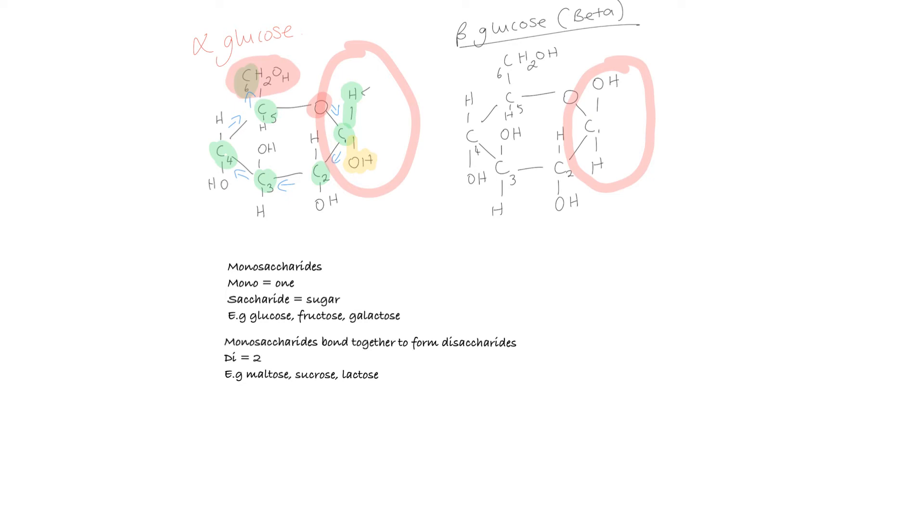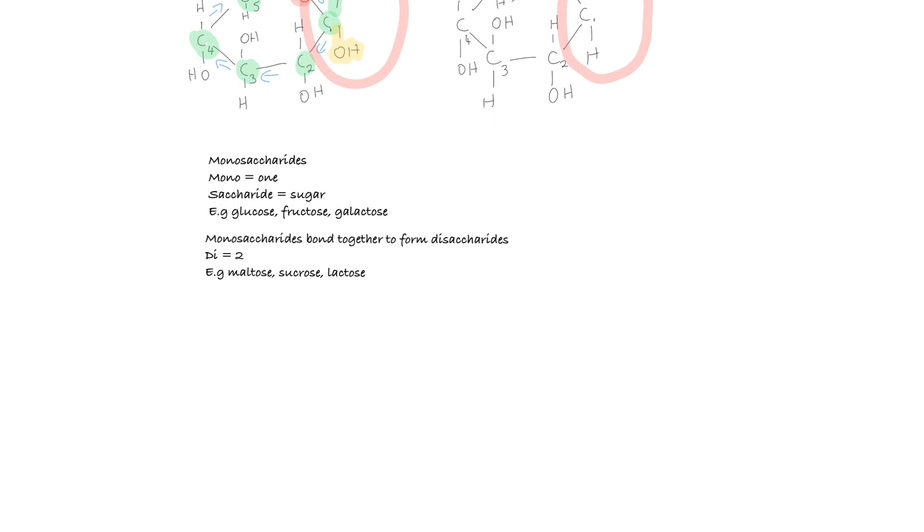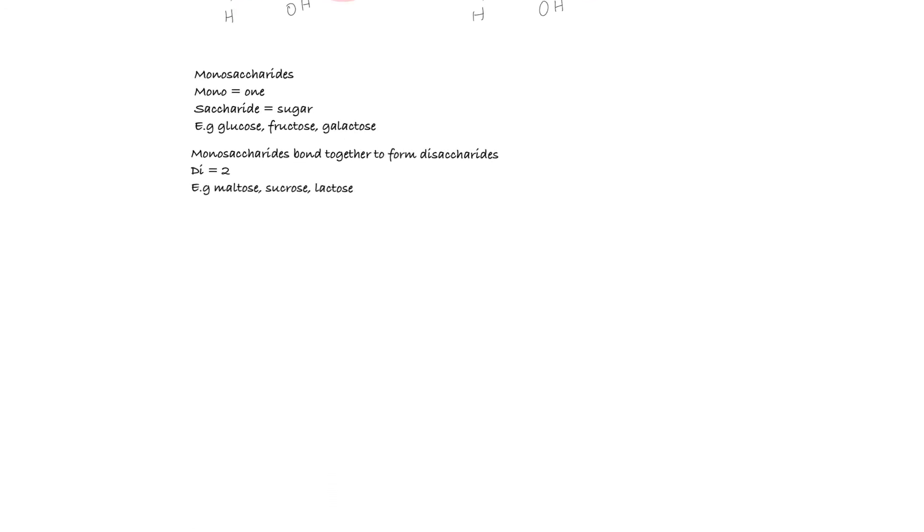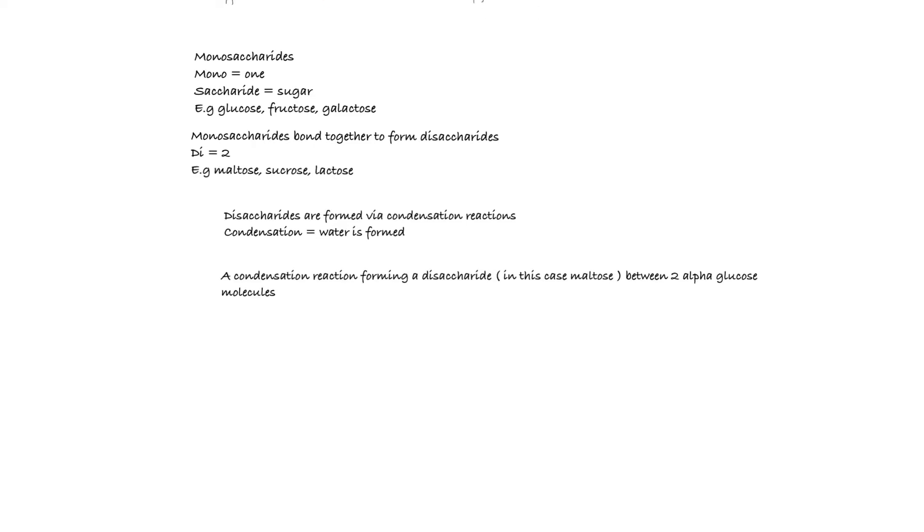We're going to talk about how we go from a monosaccharide to a disaccharide. The type of reaction that forms a disaccharide is called a condensation reaction. It's called a condensation reaction because water is formed. Water is formed and comes away from the molecule.